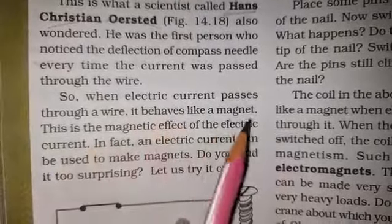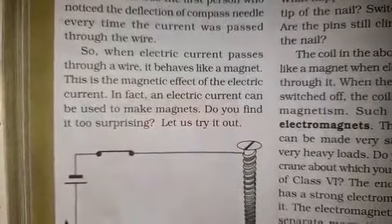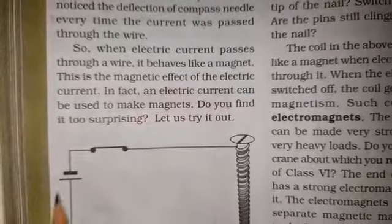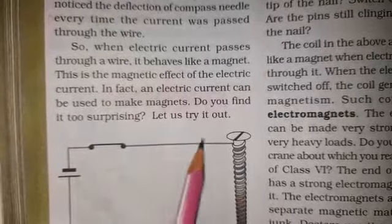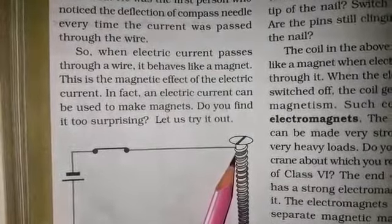So when electric current passes through a wire, it behaves like a magnet. When any electric current passes through a wire, it behaves like a magnet. This is the magnetic effect of electric current.